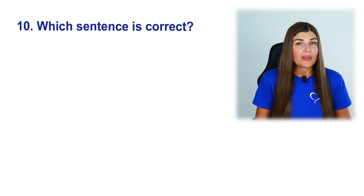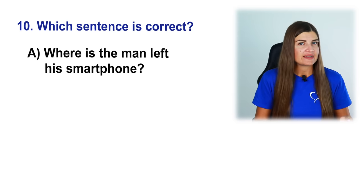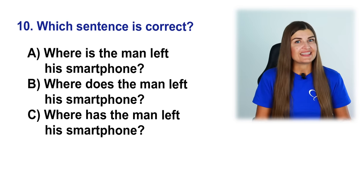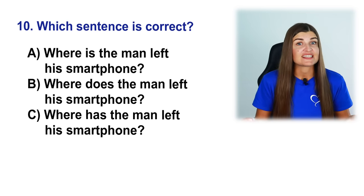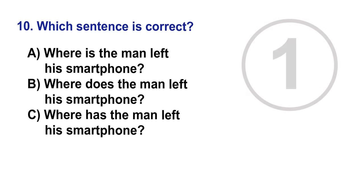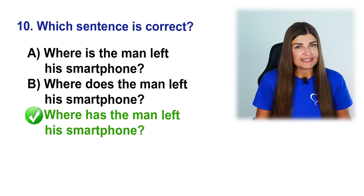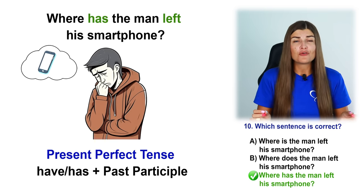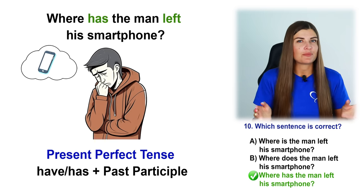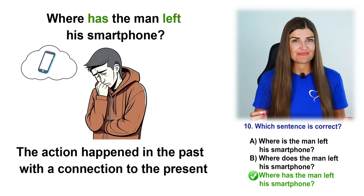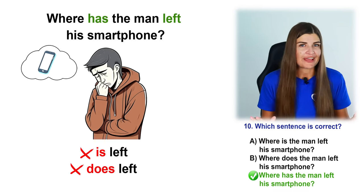Which sentence is correct? A. Where is the man left his smartphone? B. Where does the man left his smartphone? C. Where has the man left his smartphone? The correct option is C. Here we have the present perfect tense — present perfect is formed with have or has plus past participle. The verb has left is in the present perfect tense. Is left or does left are not correct. This is the end of the intermediate section.